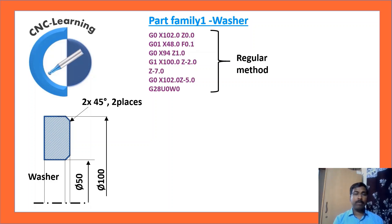Now, if you want to make a program for this using the regular method, program would be G0 X102 Z0, positioning for facing, G01 X48 F.1, so facing, G0 X94 Z1, repositioning for chamfer. G1 X100 Z2, end of chamfer, Z-7, OD turning to 7mm, G0 X102 Z-5, retract by a small amount, G28 U0 W0, going to home.